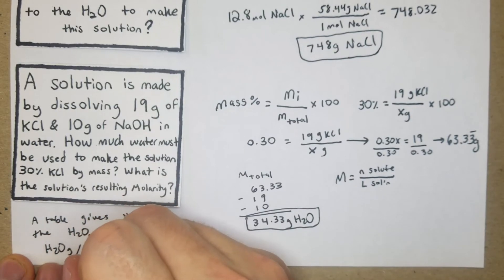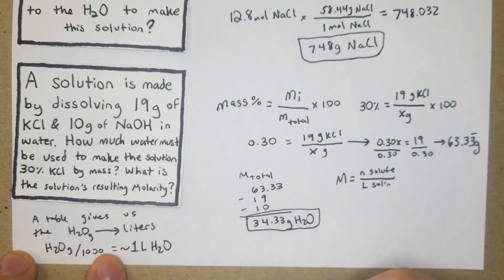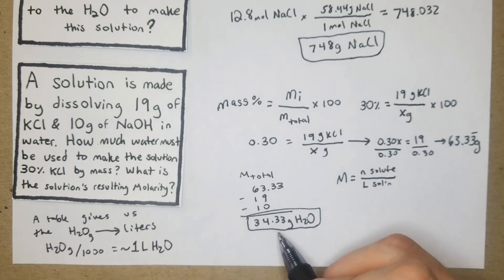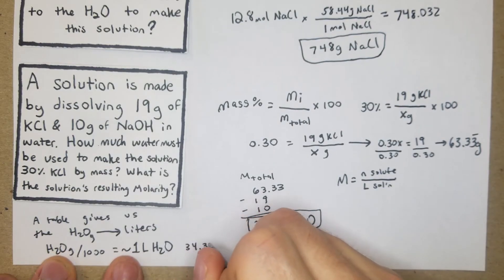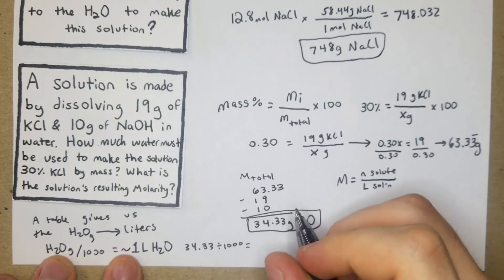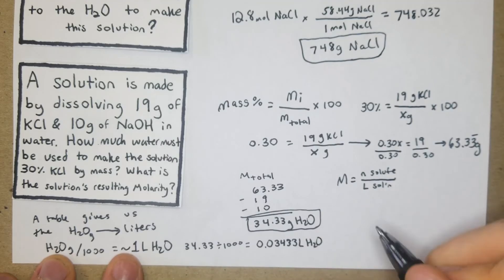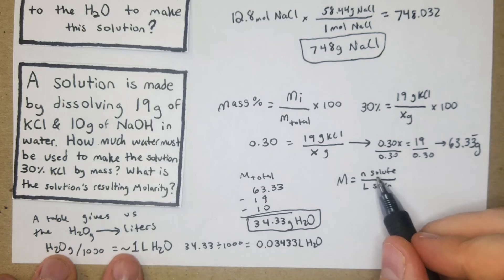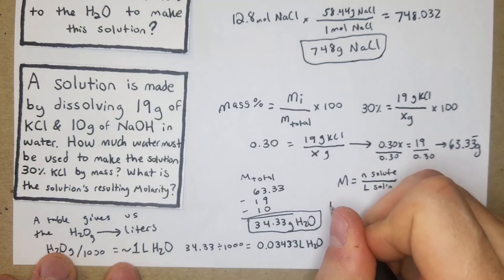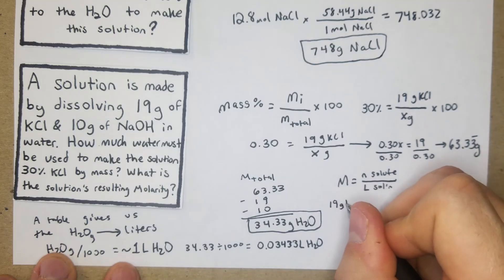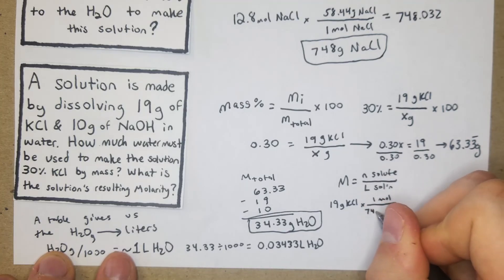To convert the water to liters: grams of H₂O divided by 1000 roughly equals liters. So 34.33 / 1000 = 0.03433 liters of H₂O. We'll plug that into the denominator. Now we need moles of each solute: for KCl, 19 grams × (1 mole / 74.55 grams) = 0.25486 moles of KCl.